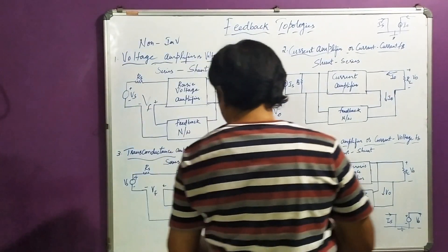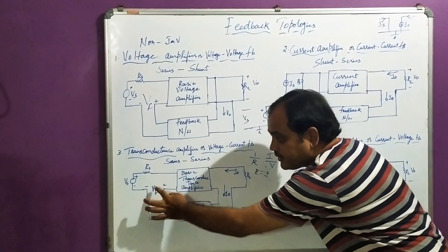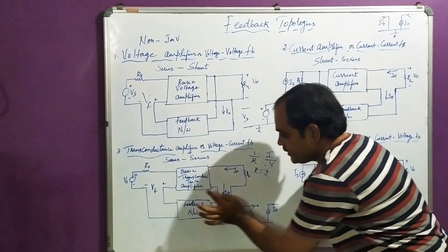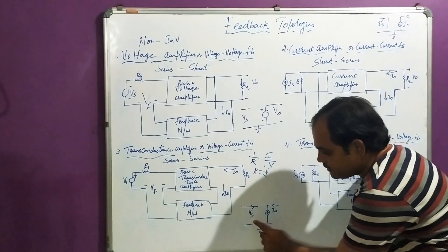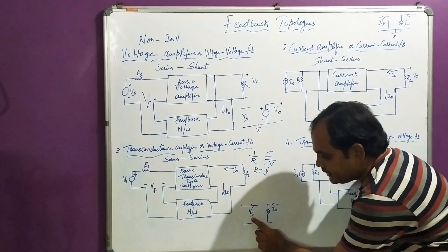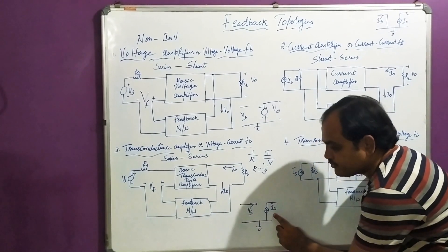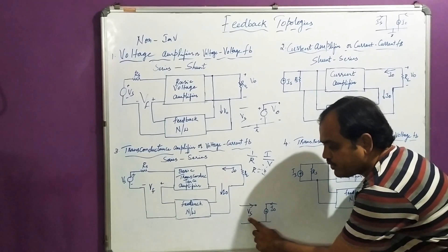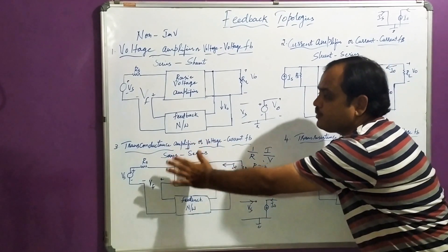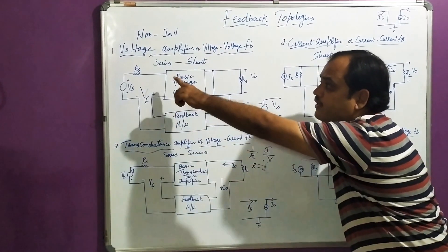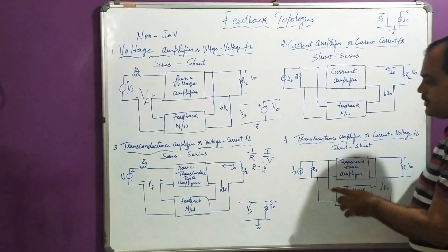Since input is voltage and output is current, the equivalent circuit is a voltage-controlled current source (VCCS). This is the replication of the first one — the voltage amplifier — but with current output.